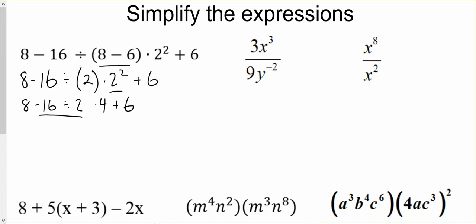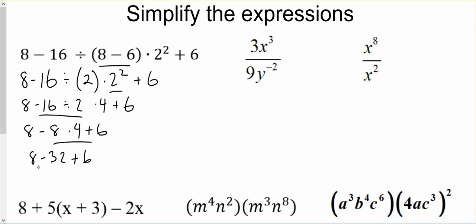We've got negative 16 divided by 2, which would be negative 8. Now we've got subtraction, multiplication, and addition, so we're going to do the multiplication. Negative 8 times 4 is negative 32. Now we're just going to work from left to right. 8 minus 32 is negative 24, plus 6 is negative 18.